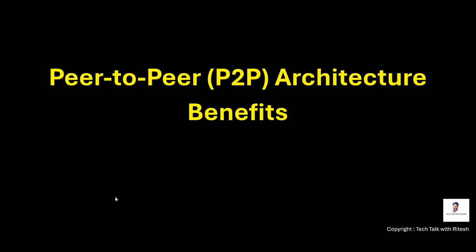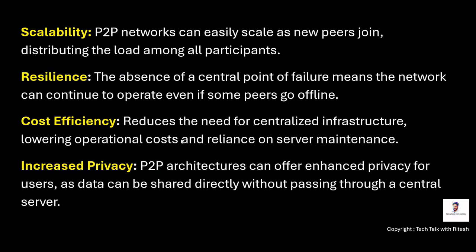What are the benefits of this architecture? First, scalability: P2P networks can easily scale as new peers join, distributing the load among all participants. Second, resilience: the absence of a central point of failure means the network can continue to operate even if some peers go offline. In a centralized server, if the server has an issue the whole network connectivity is lost, but in P2P each peer connects independently — if one peer goes down, the others continue working. It's a bit like microservices architecture in that way.